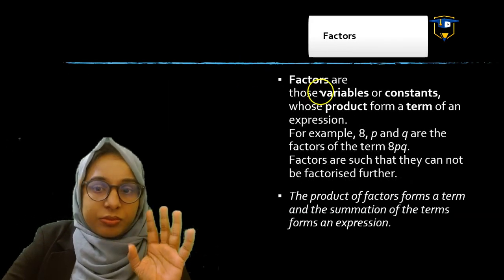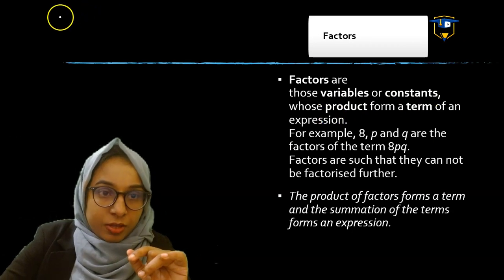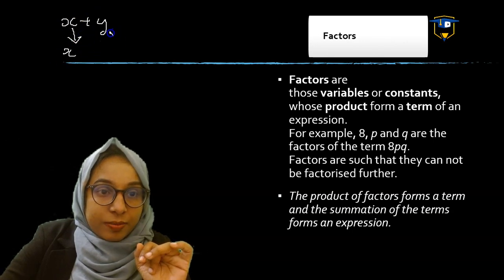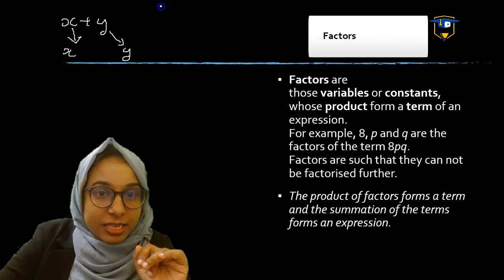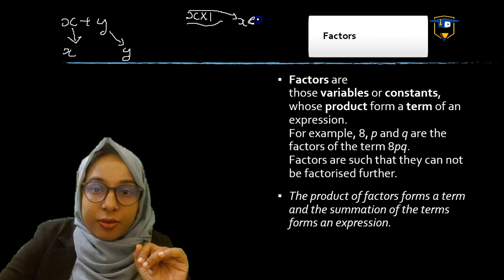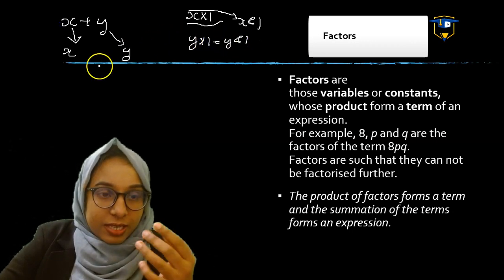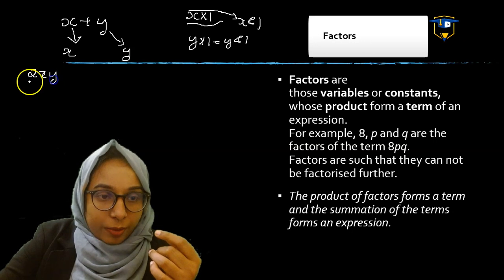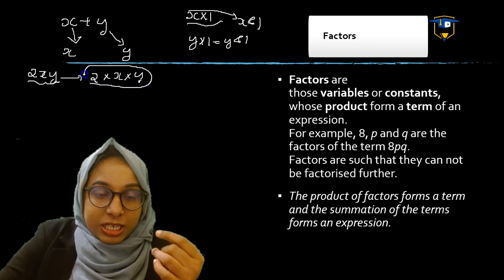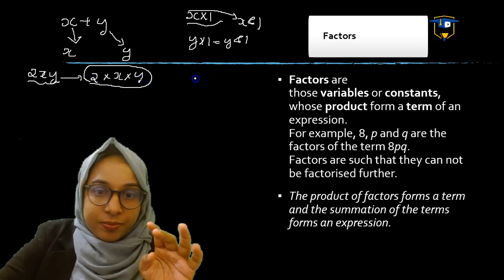Next is factors. Factors are variables or constants whose product forms a term of an expression. For example, in x plus y, x is one term and y is another. We can write x as x into 1, so x and 1 are factors of the first term. In 2xy, that is 2 into x into y, so 2, x, and y are the factors.